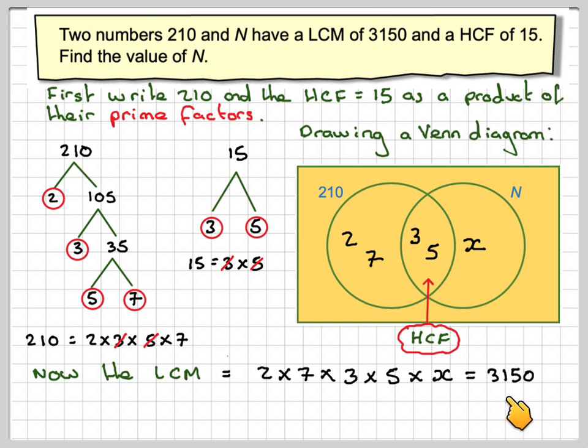So it gives you 3,150. And then we already know that two times seven times three times five is 210. So 210X will give me 3,150. And therefore X is equal to 15. So we'll put 15 in there.